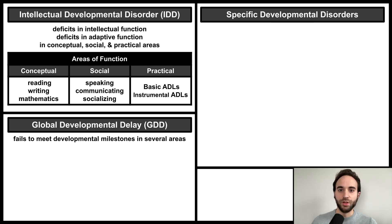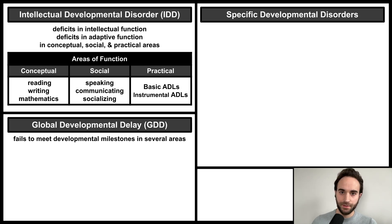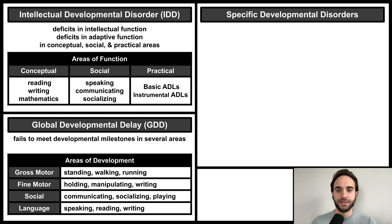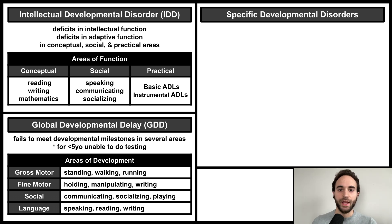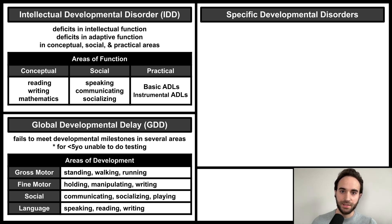Let's move on to global developmental delay. GDD simply involves failure to meet developmental milestones in multiple different areas of development. The main areas include gross motor, fine motor, social, and language. GDD is generally used as a placeholder diagnosis for patients less than five years old who are unable to participate in formal testing. Once testing can be performed, diagnoses of specific developmental delays can be used instead.